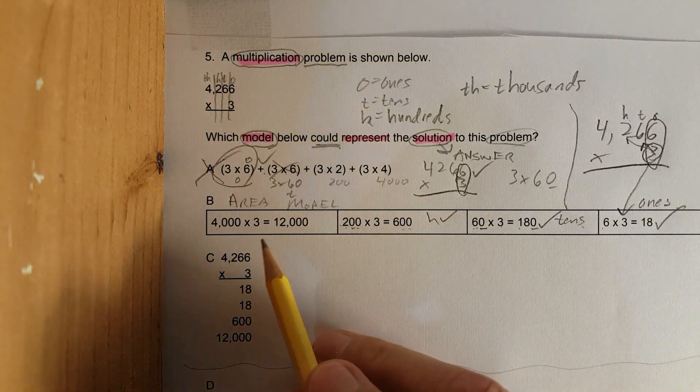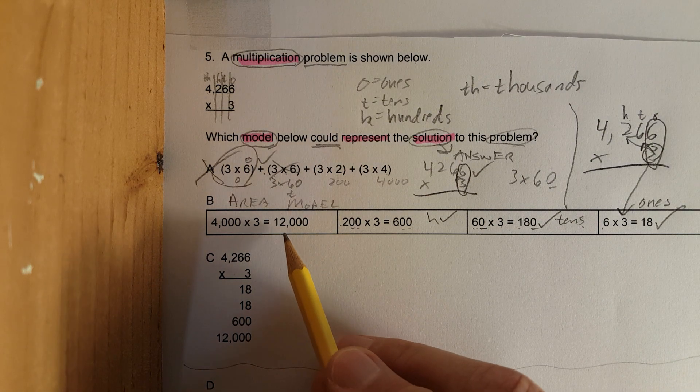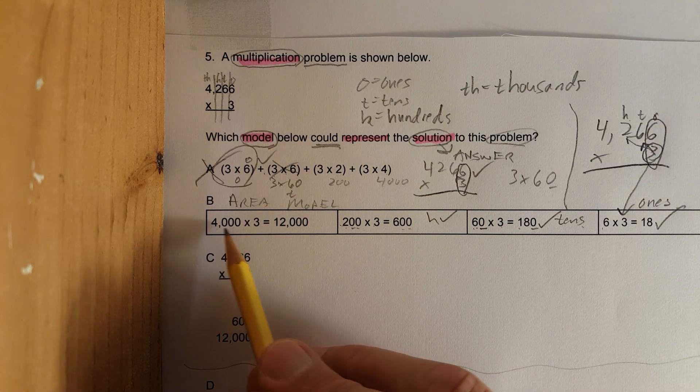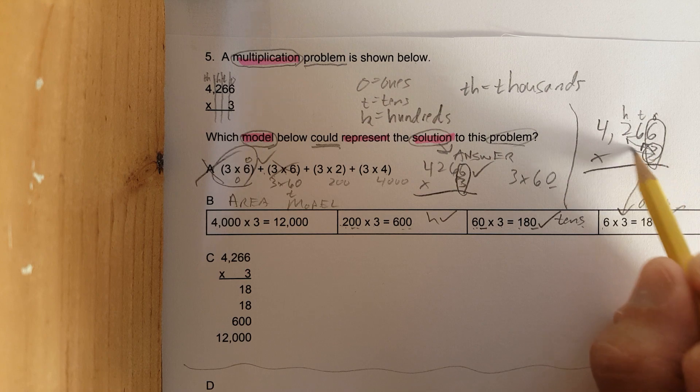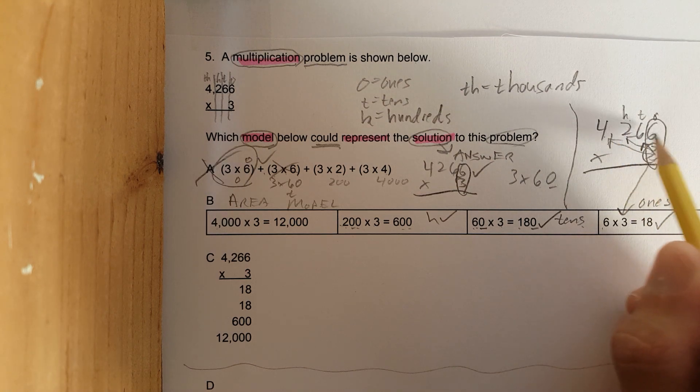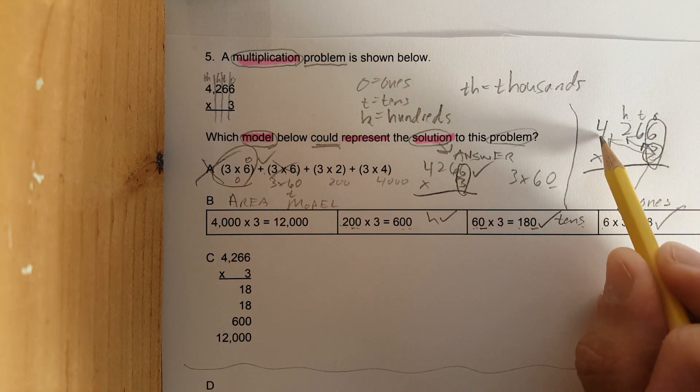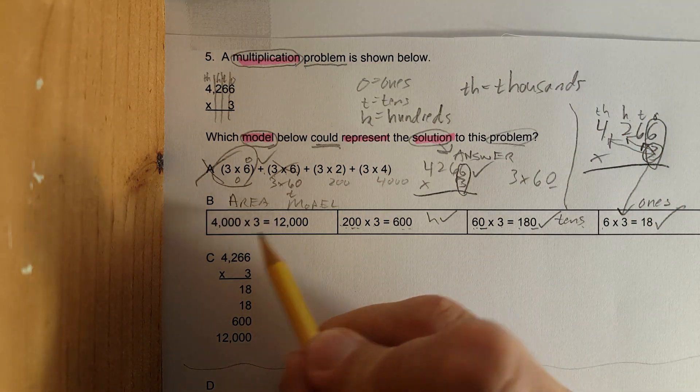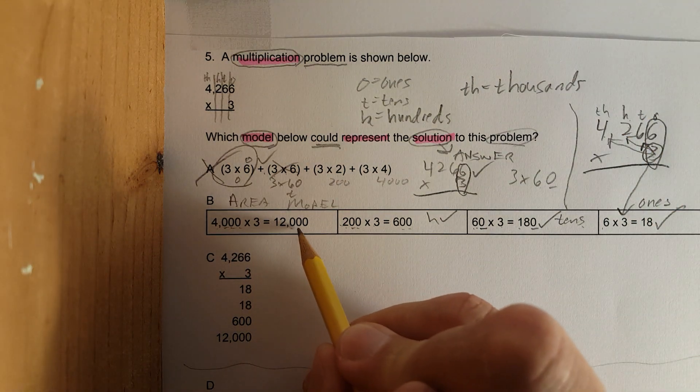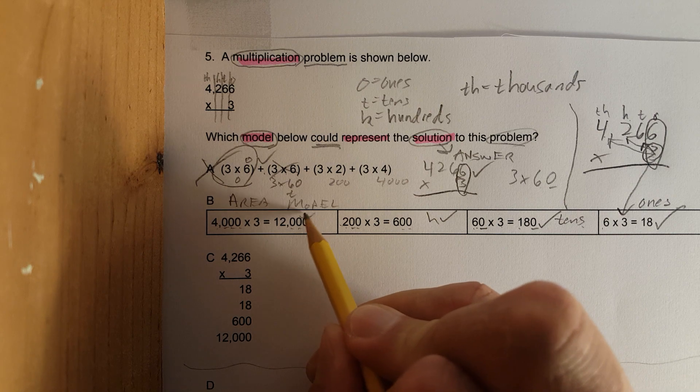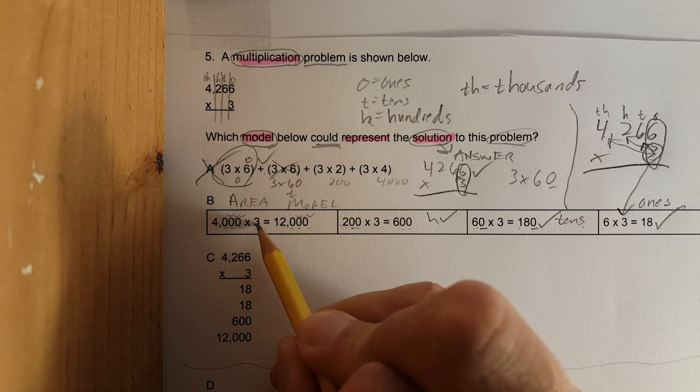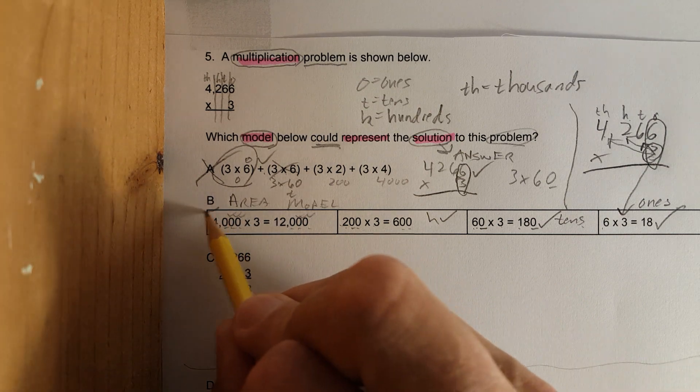And then the last one for the thousands. Are they doing this model correct? They have four thousand times three. We have three times four, one two three zeros - three times four thousand. Let's see if it's right. One two three zeros. Check, check, check. And three times four is twelve. This works.